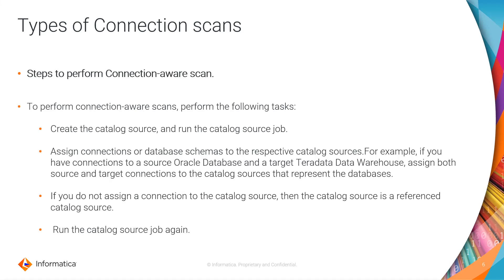Steps to perform the connection aware scan. To perform connection aware scans, perform the following tasks: Create the catalog source and run the catalog source job. Assign connections or database schemas to the respective catalog sources. For example, if you have a connection to your Oracle database source and a target Teradata data warehouse, assign both source and target connections to the catalog sources that represent the databases. If you do not assign a connection to the catalog source, then the catalog source is a reference catalog source. Run the catalog source job again.